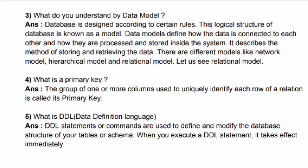Fourth question: What is a primary key? Answer: The group of one or more columns used to uniquely identify each row of a relation is called its primary key. Fifth question: What is DDL (Data Definition Language)? Answer: DDL statements or commands are used to modify the database structure of your tables or schema. When you execute a DDL statement, it takes effect immediately.